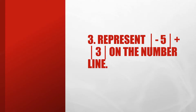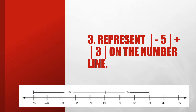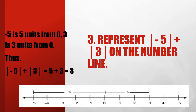Represent the absolute value of negative 5 plus the absolute value of 3 on the number line. Zero is in the middle. Negative 5 is to the left of zero, and positive 3 is to the right of zero. Negative 5 is 5 units from zero, and 3 is 3 units from zero. Thus, |−5| + |3| = 5 + 3 = 8.